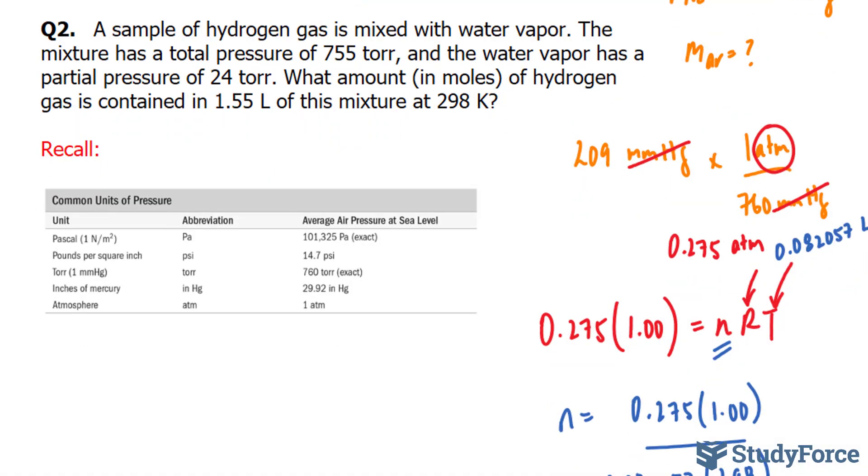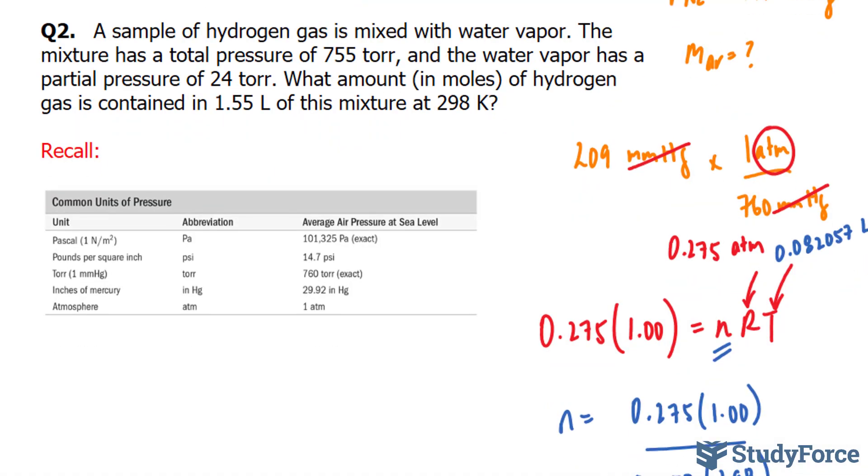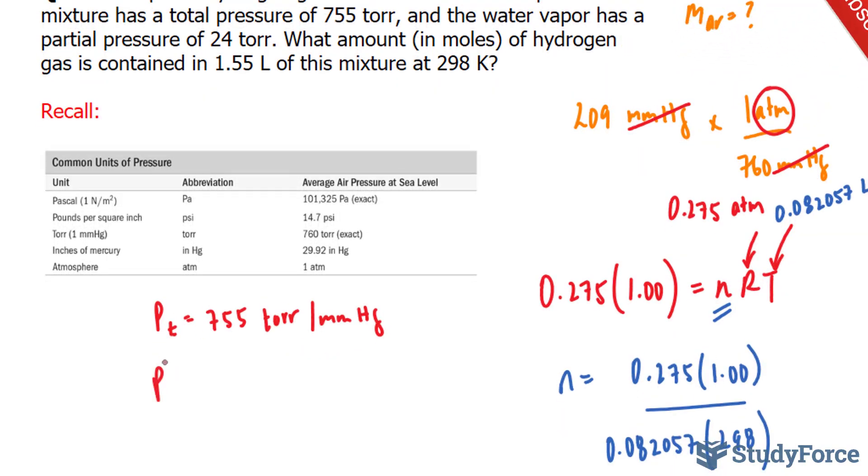Just like in question number 1, we have to write down everything we know. We've been told that the total pressure, which I'll represent as P sub T, is equal to 755 torr, which is equivalent to mmHg, millimeters of mercury. We've been told that the partial pressure of water vapor, which I'll represent as PH2O, is equal to 24 torr.